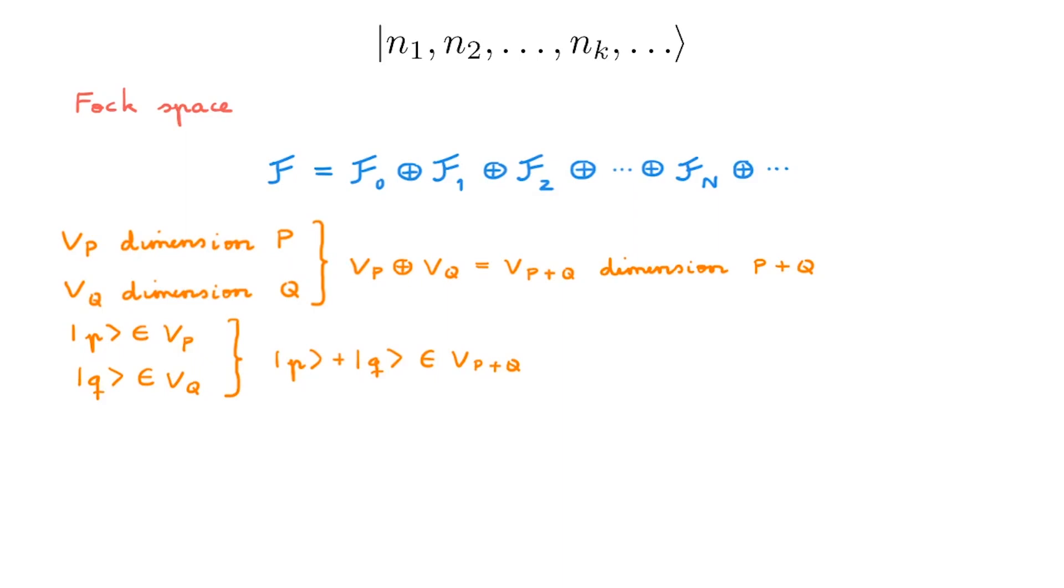As such, a basis for V P plus Q is simply obtained by combining the individual bases for VP and VQ.